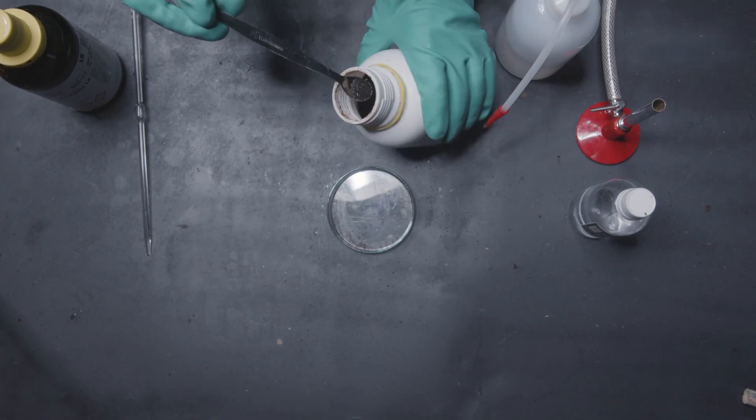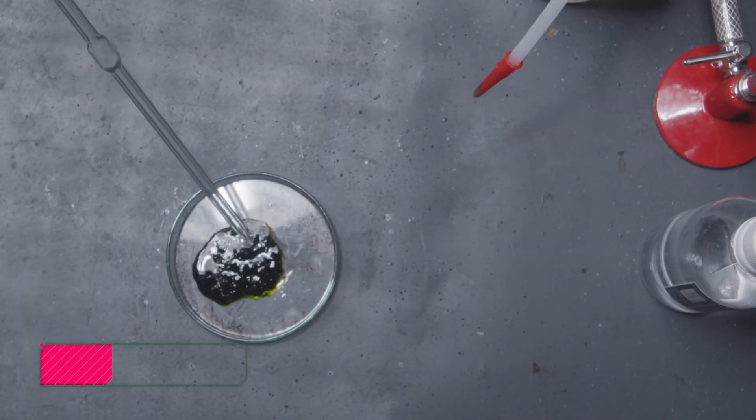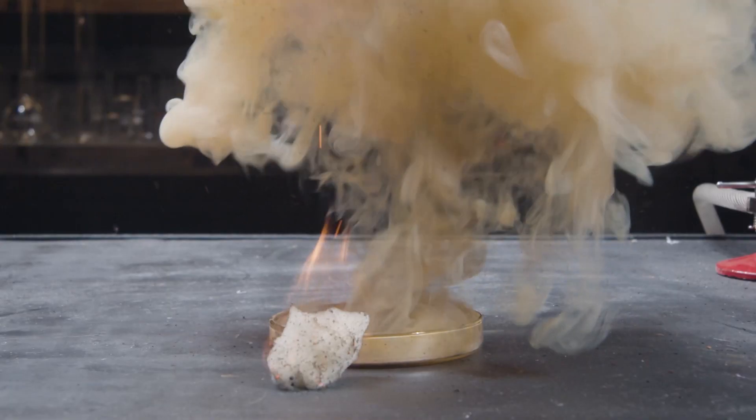Now let's burn some more stuff. Repeat the same steps as above to get manganese heptoxide in the petri dish. Now drop a cotton ball on it and witness cotton candy from hell.